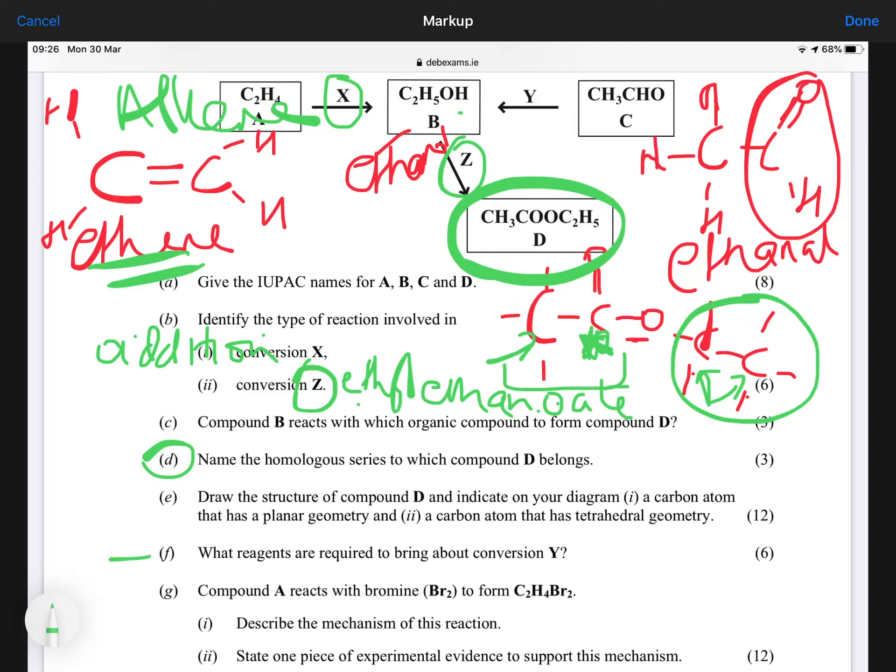What reagents are required for conversion Y? Now, this is Y. Y is going from an aldehyde back to an alcohol. So what do you need for reduction? You need nickel, and you need hydrogen gas. Now, notice that they just say what reagents there, so you wouldn't have to name them out. But to be safe, you should probably name them in case you miss it in the real exam.